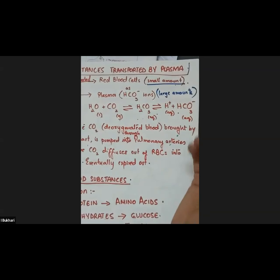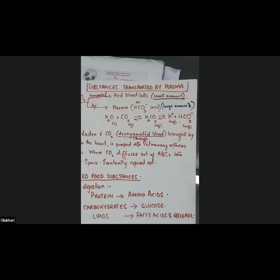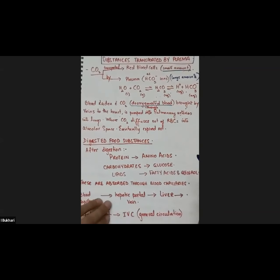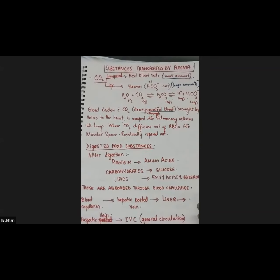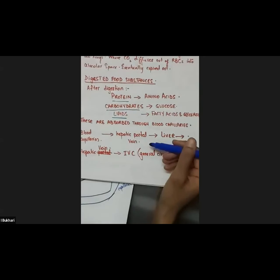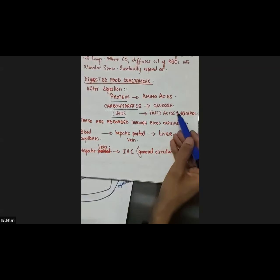The blood rich in carbon dioxide is deoxygenated blood and it is in the veins. Veins eventually drain into the heart, and the heart pumps it to the lungs through the pulmonary arteries, where it refreshes its oxygen supply and gets rid of carbon dioxide, which is expired out through exhaled air. Now let's move on to digestive food substances. The major food molecules — proteins are digested into amino acids, carbohydrates into glucose, lipids into fatty acids and glycerol.